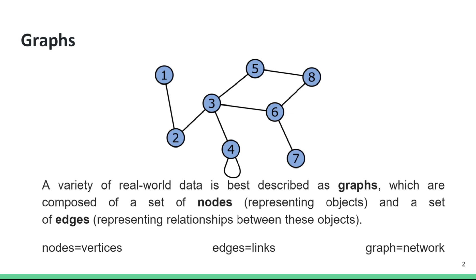We note here that in the literature, the terms nodes and vertices are used interchangeably. This is the same for the terms edges and links. Depending on the field, the terms graph and network may also be interchangeable.